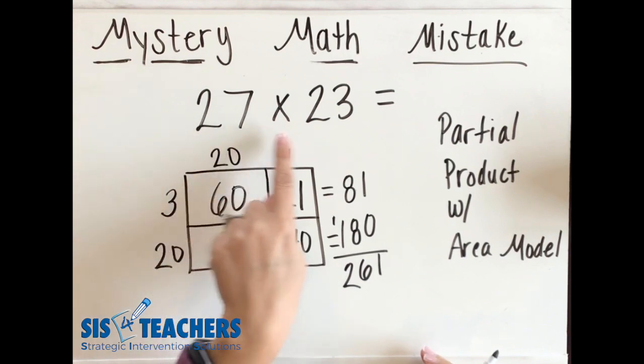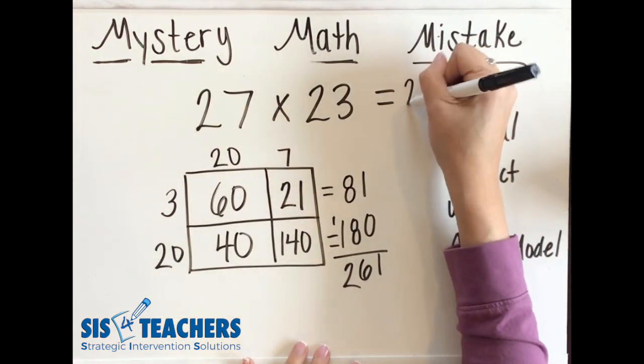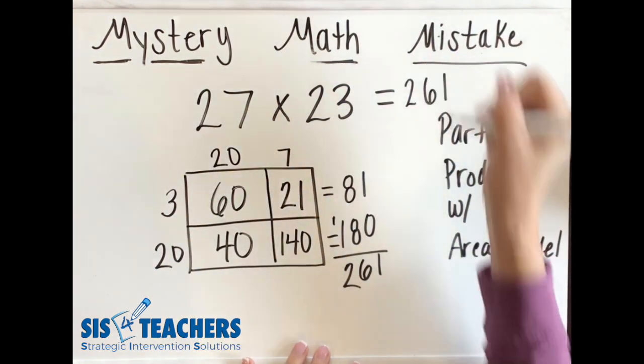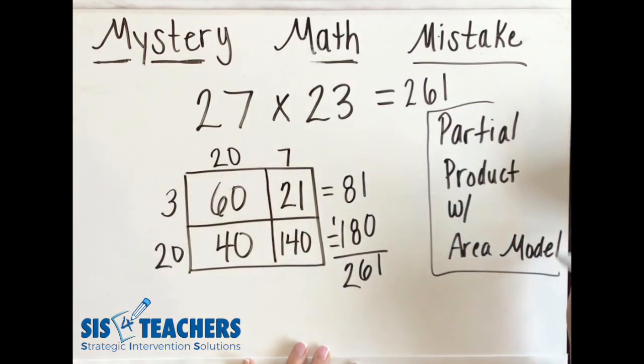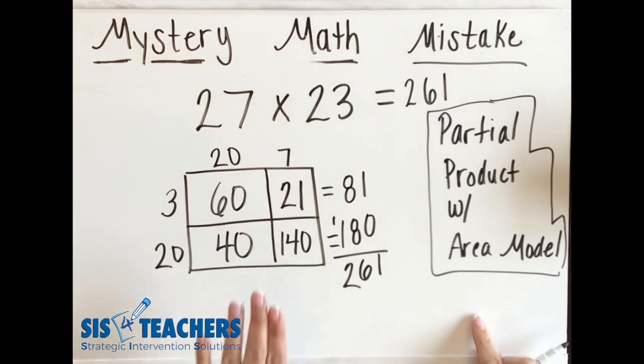So I know that 27 times 23 is 261 using partial products with the area model to demonstrate my knowledge in multiplication.